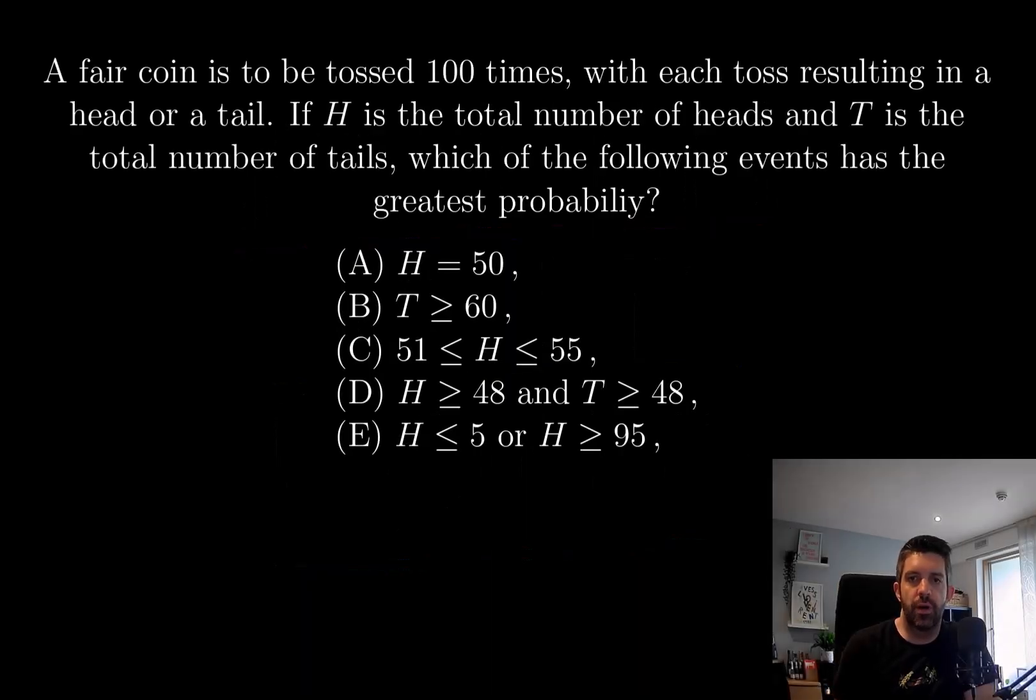A fair coin is to be tossed 100 times, with each toss resulting in a head or a tail. If H is the total number of heads and T is the total number of tails, which of the following events has the greatest probability?